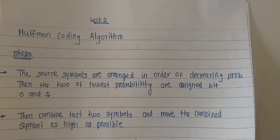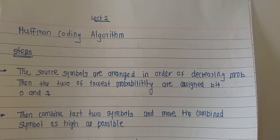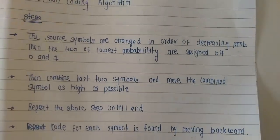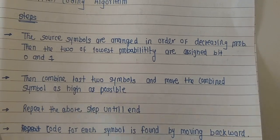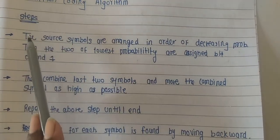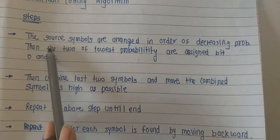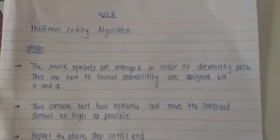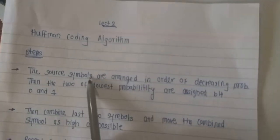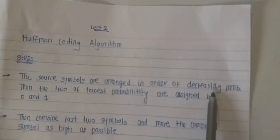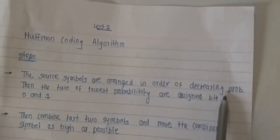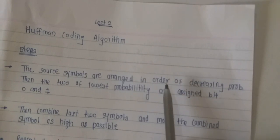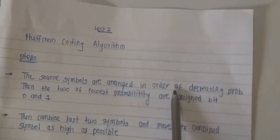Hello students, today we are going to learn Huffman coding. These are the steps for Huffman coding. Step number one: you have to arrange your symbols or probabilities in decreasing order — the same as Shannon-Fano — with the largest probability at the top.